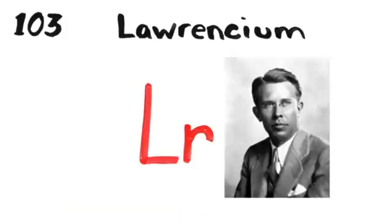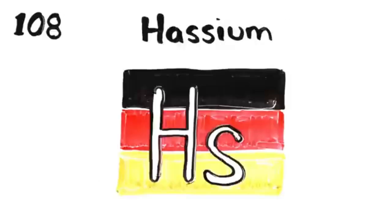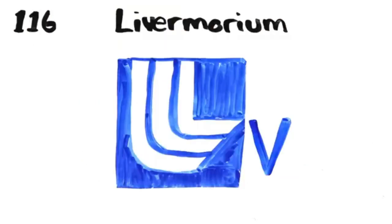Rutherfordium, dubnium, seaborgium, bohrium, hassium, meitnerium, darmstadtium, roentgenium, copernicium, nihonium, flerovium, moscovium, livermorium, tennessine, and oganesson.